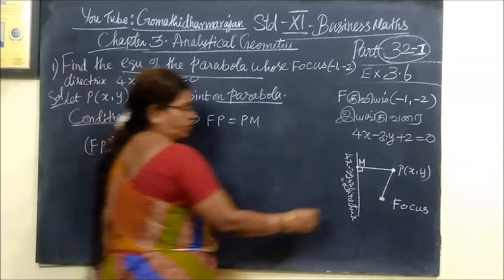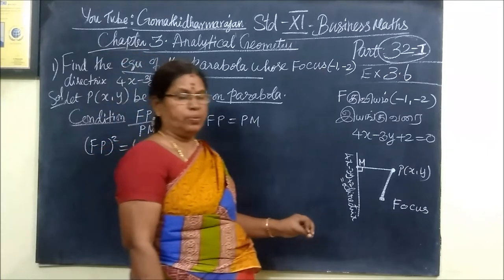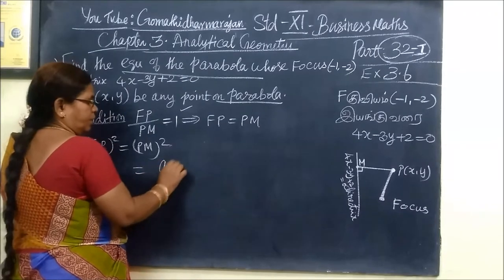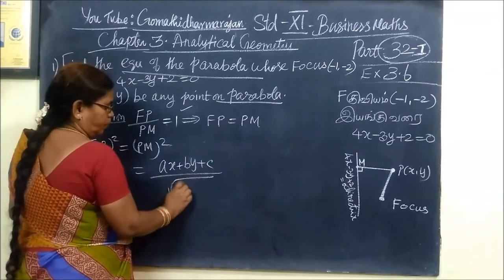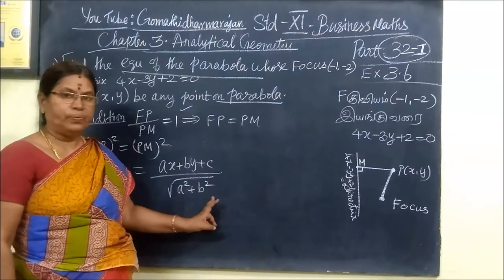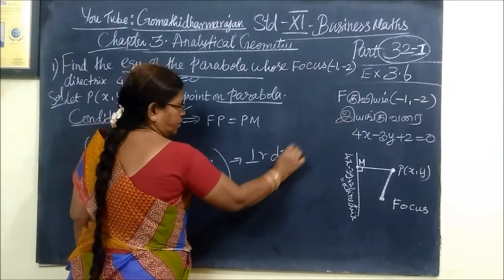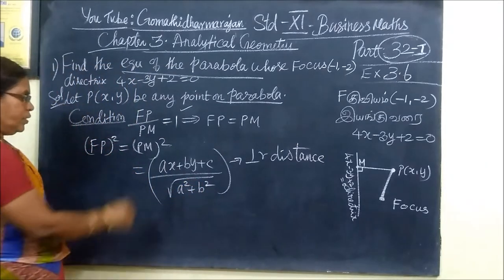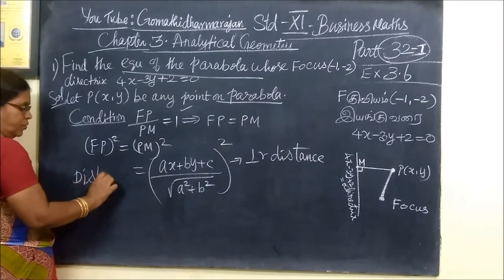We are using the distance formula. We are using this formula for the perpendicular distance: AX plus BY plus C divided by the square root of A squared plus B squared. That is AX₁ plus BY₁ plus C divided by root of A squared plus B squared. This is our formula for perpendicular distance.